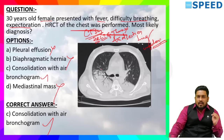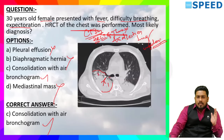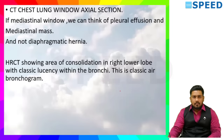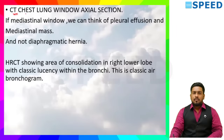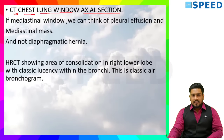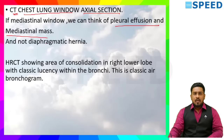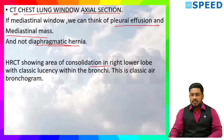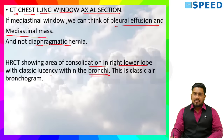How do we tell? In the lung window, air appears black. The consolidation part appears white. And what is this blackish structure present inside? These are the bronchi where air is present — so this is the air bronchogram sign. If mediastinal window, we can think of pleural effusion and mediastinal mass, and this is not a diaphragmatic hernia. HRCT here shows an area of consolidation in the right lower lobe with classic lucency within the bronchi — this is the classic air bronchogram sign.